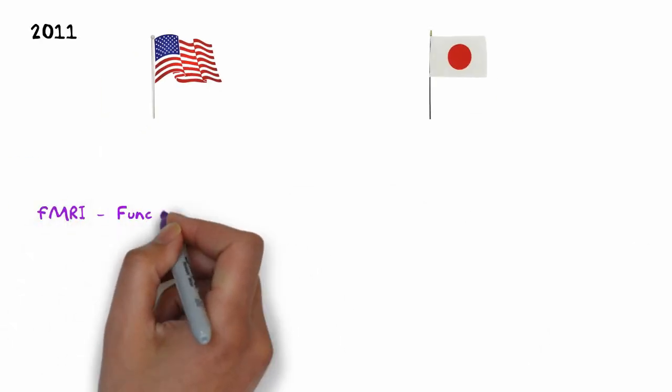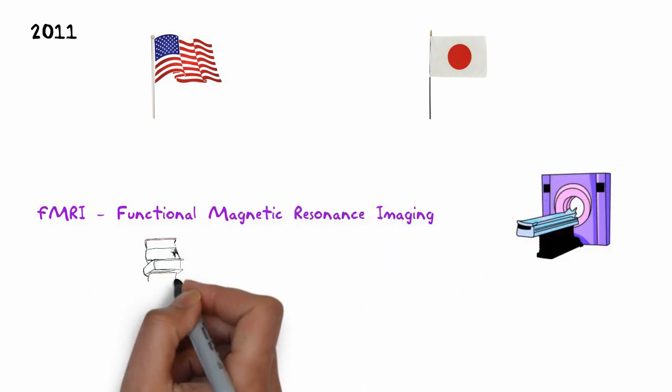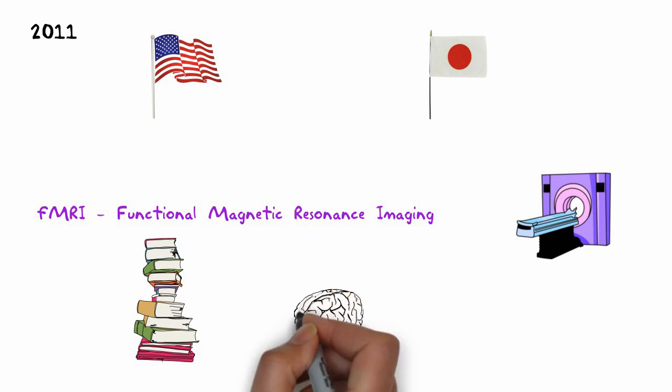A joint American and Japanese team believe that it's possible to use an fMRI machine to generate specific patterns inside your brain that can be used to teach you new things.